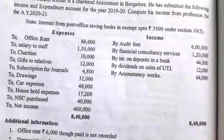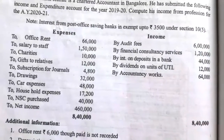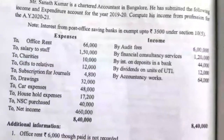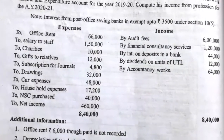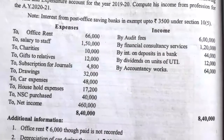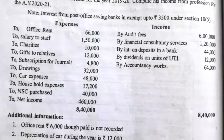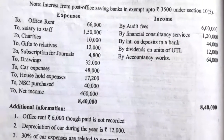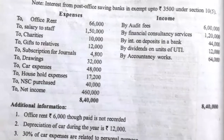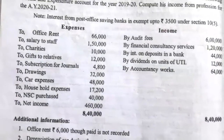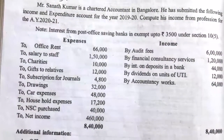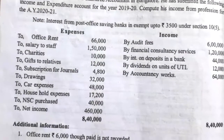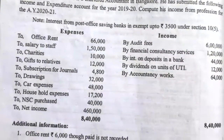The income and expenditure account is given. The debit side shows the expenses. Office rent: Rs. 66,000. Salary to staff: Rs. 1,50,000. Charities: Rs. 10,000. Gift to relatives: Rs. 12,000. Subscription to journals: Rs. 4,800. Drawings: Rs. 32,000. Car expenses: Rs. 48,000. Household expenses: Rs. 17,200. NSC purchase: Rs. 40,000.